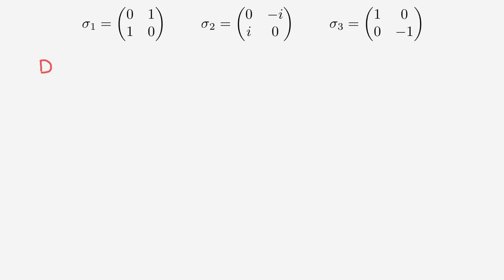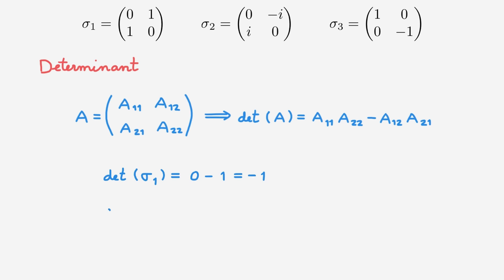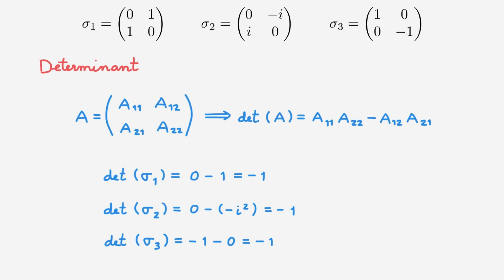Next, we're going to look at the determinant of the Pauli matrices. For a general 2x2 matrix A, the determinant is easy to calculate: we multiply the two diagonal elements together and subtract the product of the two off-diagonal terms. The determinant of sigma 1 is 0 minus 1, which is -1. The determinant of sigma 2 is 0 minus (-i²), which is -1. And the determinant of sigma 3 is -1 minus 0, which is also -1. So all Pauli matrices have determinant equal to -1.